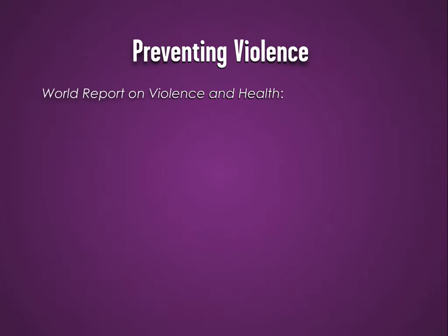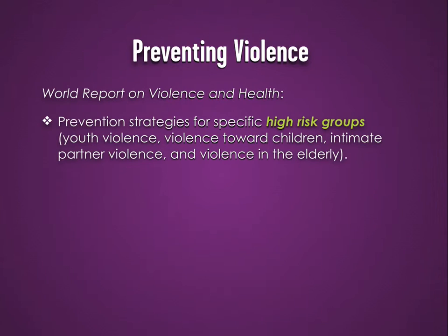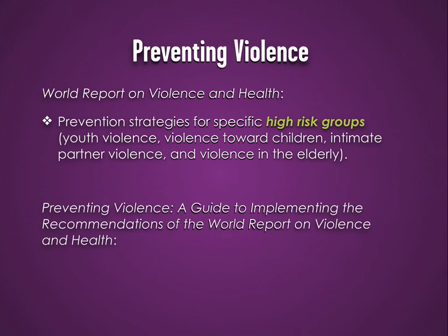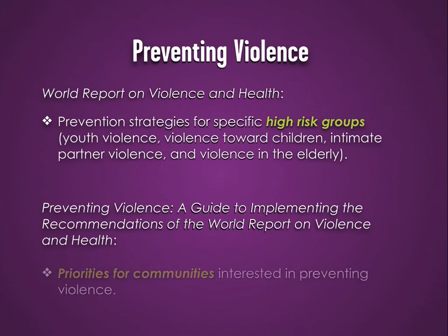The main prevention strategies outlined in the World Report on Violence and Health include prevention strategies for specific high-risk groups, such as youth violence, violence towards children, intimate partner violence, and violence in the elderly. The key ideas outlined in Preventing Violence: a guide to implementing the recommendations of the World Report on Violence and Health include priorities for communities interested in preventing violence.